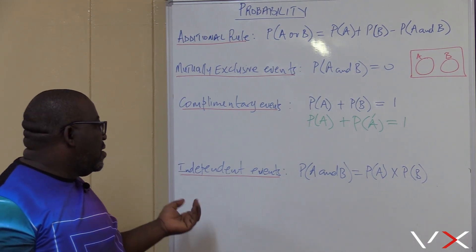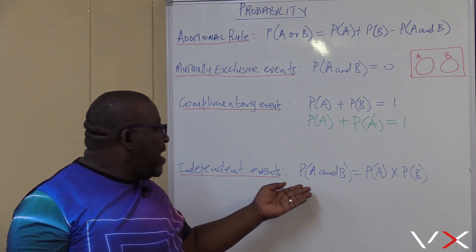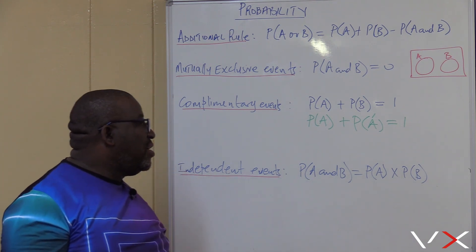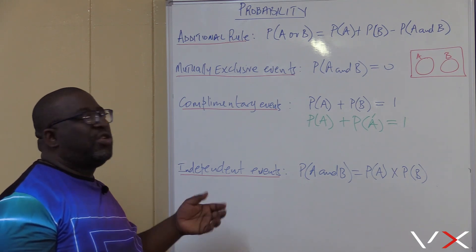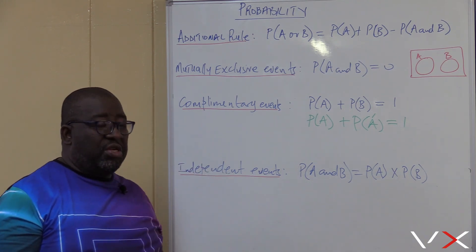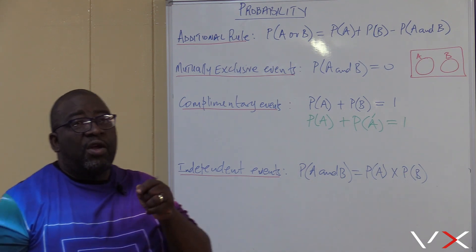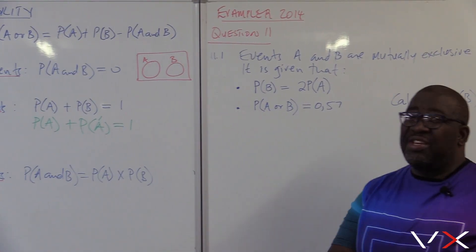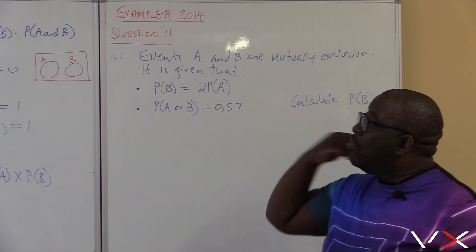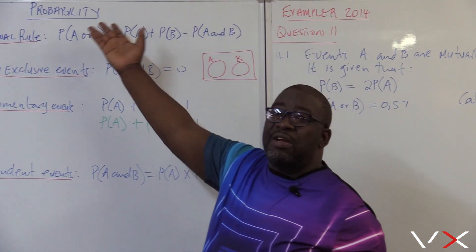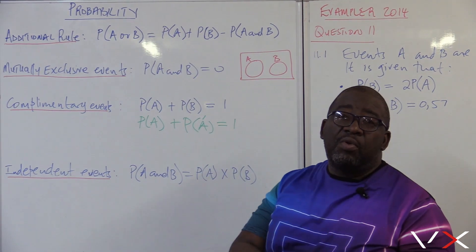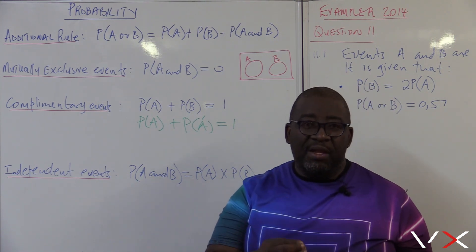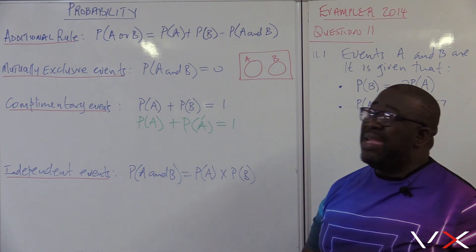We come to independent events. In independent events, probability of A and B — sometimes we call this the product rule — probability of A and B is equal to probability of A times probability of B. Now, there are a number of questions dealing with all these types of events. Remember, when I have probability of A or B, I will know definitely that this will be the addition rule: probability of A or B equals probability of A plus probability of B minus the intersection, which is probability of A and B.